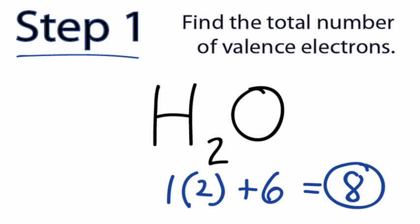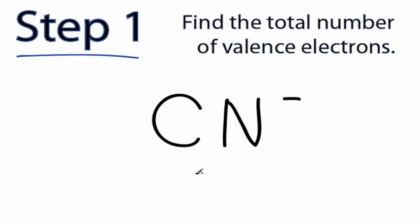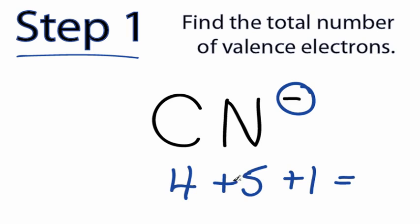Let's try one more. Cyanide. For cyanide, we can look on the periodic table again. Carbon has 4 valence electrons, and nitrogen has 5. The trick for this one though, it's a negative ion. This negative sign right here tells you that there's going to be one extra valence electron. So, 4 plus 5 plus 1, 10 valence electrons for the cyanide ion.